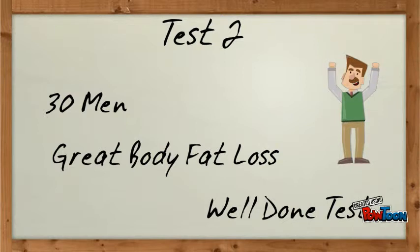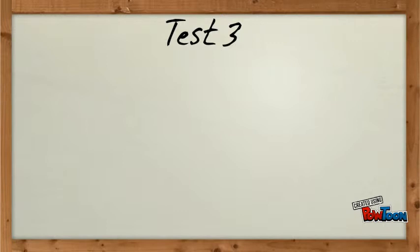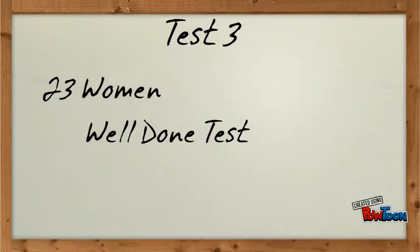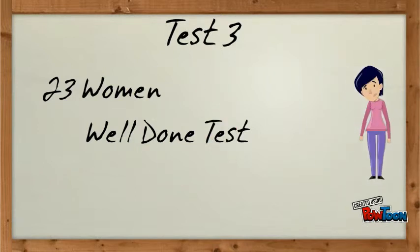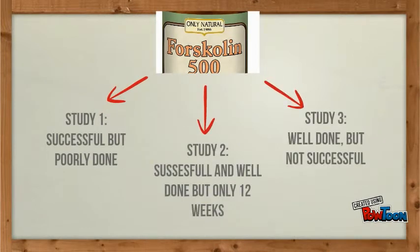Given that Forskolin worked so well the first time we had a good test, it was reasonable that it should work again. So they tested it another time, but this time they grabbed 23 women. They did the test just the same way as they had done the previous test and it was really well controlled. Unfortunately, this time there was no weight loss. So to summarize, we've got three tests in humans: one that was not a great test, one test that was really good and showed great results, and one test that was well-controlled but showed absolutely no results.